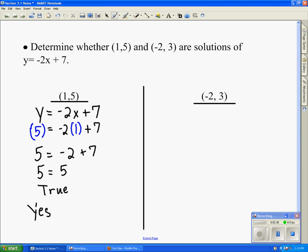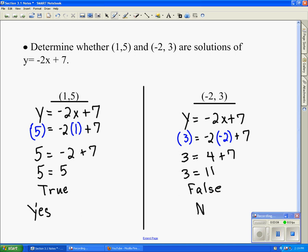Now we're going to test the ordered pair (-2, 3). I write my original equation, and this time I'm going to substitute -2 in place of x, 3 in place of y, bring everything else down exactly as it is in the above equation, and solve. 3 equals 11. That's a false statement. Since this is a false statement, we say no, this is not a solution. So we have one example where yes, it tests to be a solution, and another example where no, it is not.